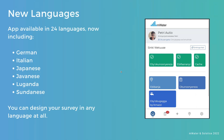We've added new languages to the MWater and Solstice apps, so the app is now available in 24 languages, including German, Italian, Japanese, Javanese, Luganda, and Sundanese in Indonesian. This is the translation of the app interface. However, you can also design your surveys in any language at all and translate them to multiple languages — that translation is up to you and can be done through the portal.